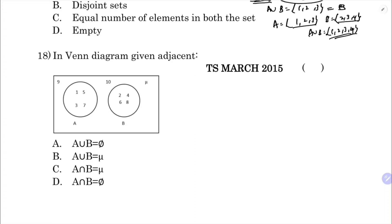From the Venn diagram, the two sets are clearly disjoint - no overlapping region. If they are disjoint sets, then A intersection B is null set. The correct option follows from this.